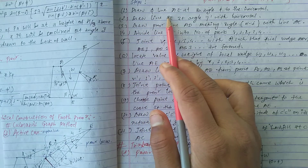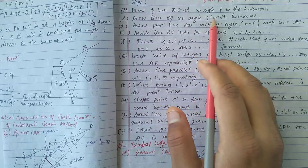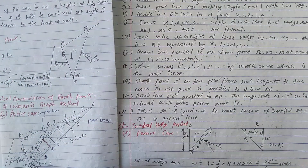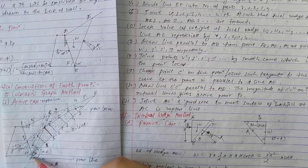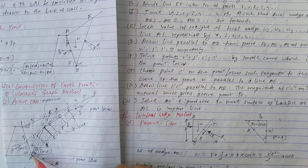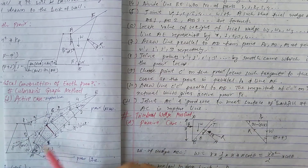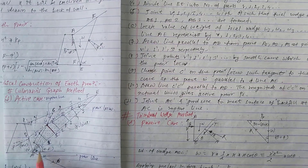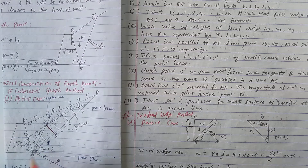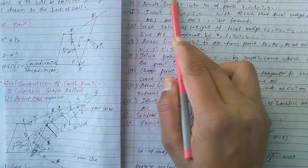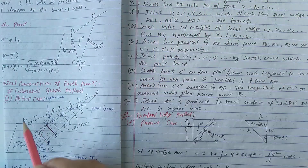First, draw line AE at an angle φ to the horizontal. The angle φ is marked here — if A is here and E is here, the angle φ is at this position. The horizontal angle φ is shown here.